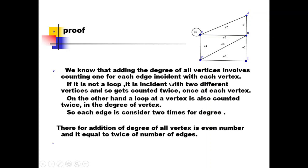On the other hand, if it is a loop — here e8 is a loop — it is also counted twice in the degree of the vertex. The degree of vertex e is five: a loop contributes two to the degree, and there are three remaining edges incident with e. So any edge, whether a regular edge or a loop, is counted two times. Therefore the sum of degrees of all vertices is an even number equal to twice the number of edges. This completes the proof.